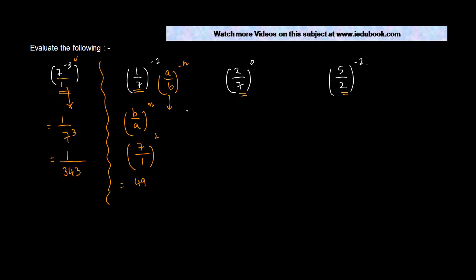Right, the third one. Two upon seven to the power zero. Interesting, it's neither negative nor positive but it is an integral power. So how do we solve this? We know a upon b to the power n is equal to what? A to the power n divided by b to the power n.